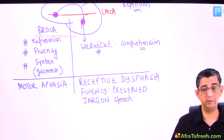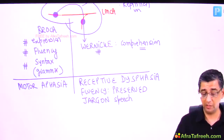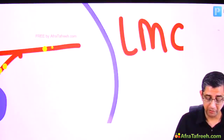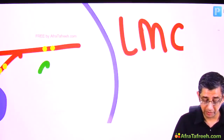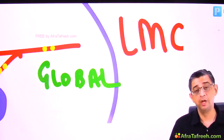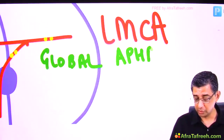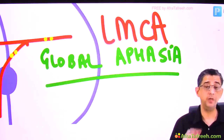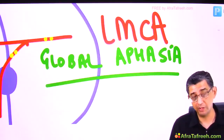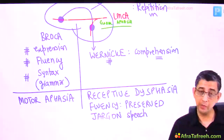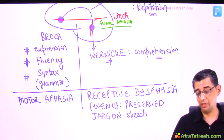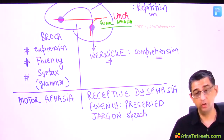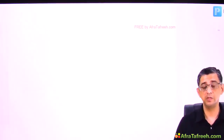If the main trunk of the left middle cerebral artery itself is occluded, the manifestations are far more extreme — the patient can neither understand, nor repeat, nor produce speech. This is called global aphasia. So remember three types: motor aphasia (Broca's / superior MCA), receptive aphasia with preserved fluency (Wernicke's / inferior MCA), and global aphasia (main MCA trunk).